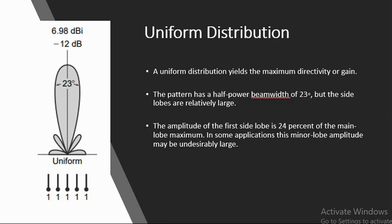So coming to details of uniform distribution. Let us consider a linear array of 5 isotropic point sources with lambda by 2 spacing. The point sources are equal in amplitude and in phase. The uniform distribution pattern has half power beam width of 23 degrees and relatively large side lobes.